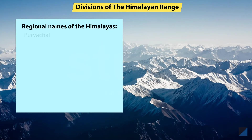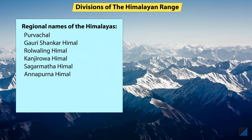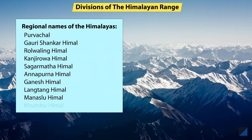Like Purvachal, some other regional names of the Himalayas are Gauri Shankar Himal, Rolwaling Himal, Kanji Rova Himal, Sagar Math Himal, Annapurna Himal, Ganesh Himal, Langtang Himal, Manaslu Himal, Khumbu Himal, etc.